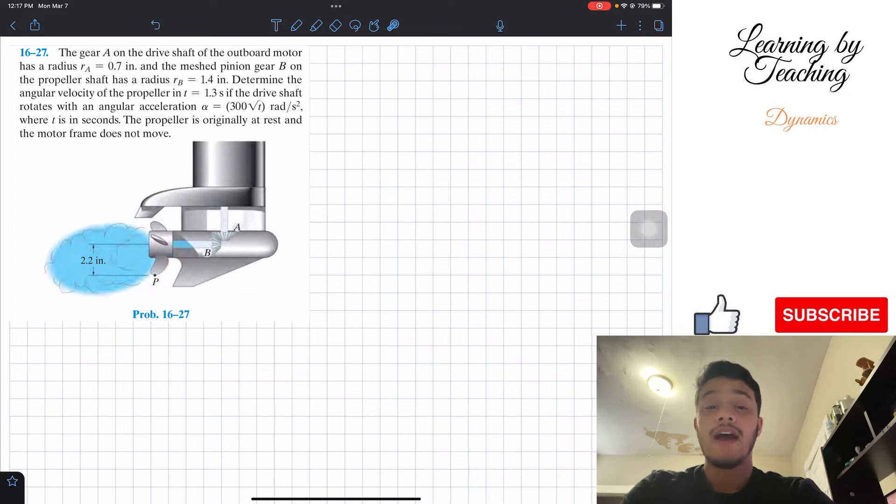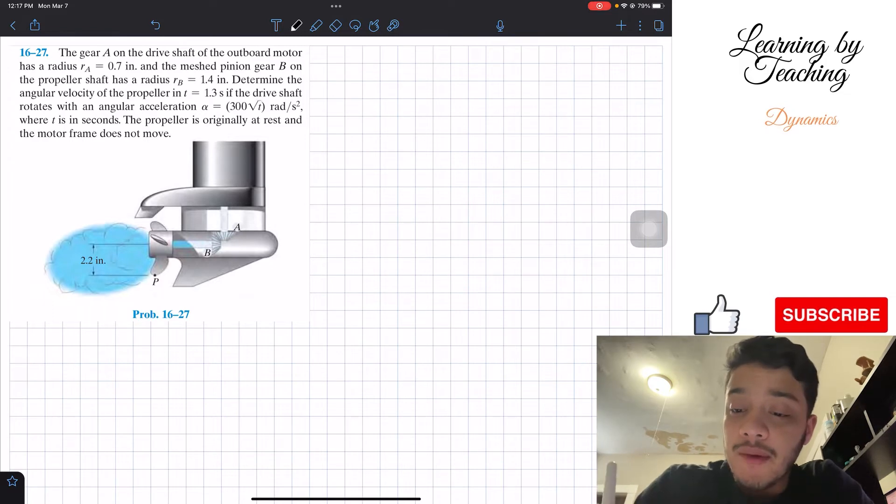Now that we have that, what we can say is, let's first write out my givens. I'm given that RA is equal to 0.7 inches, RB, the radius of B, is equal to 1.4 inches.